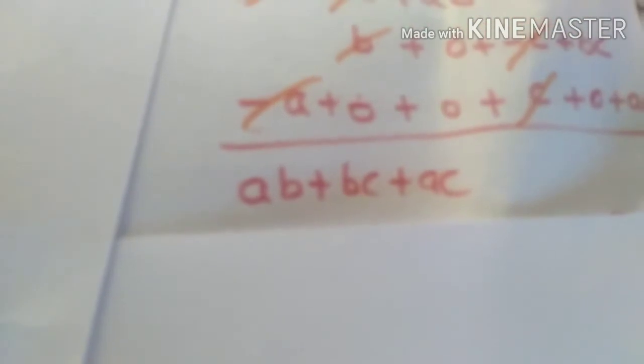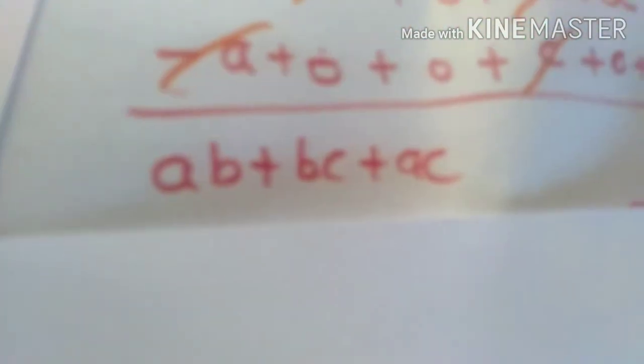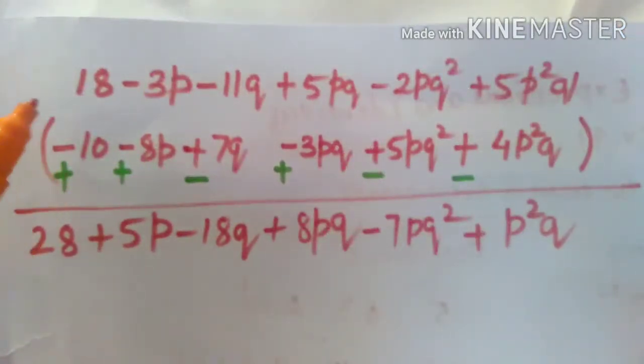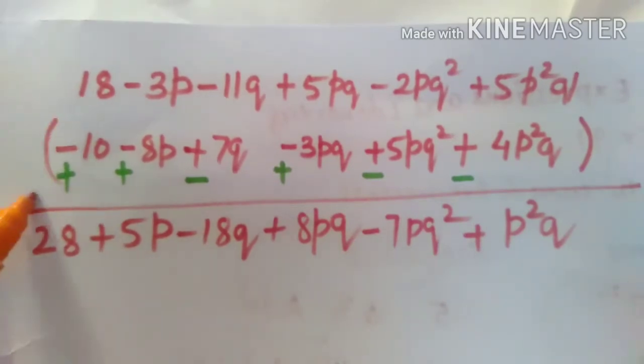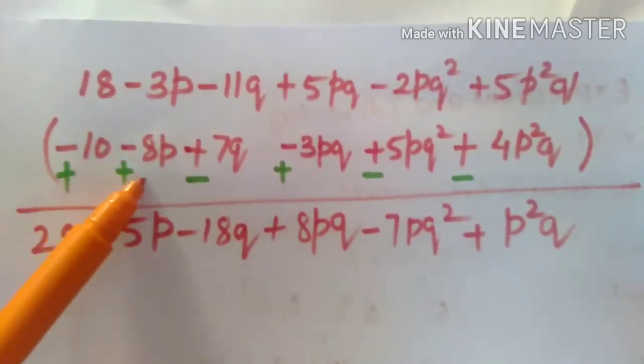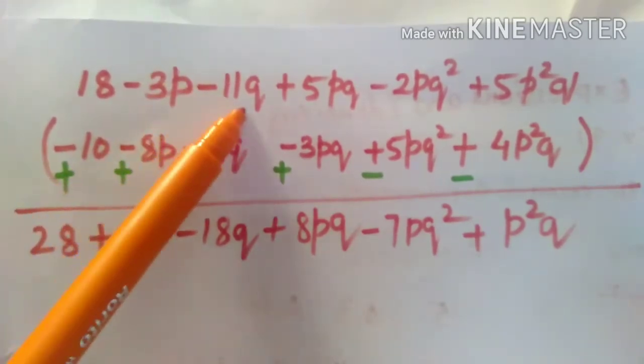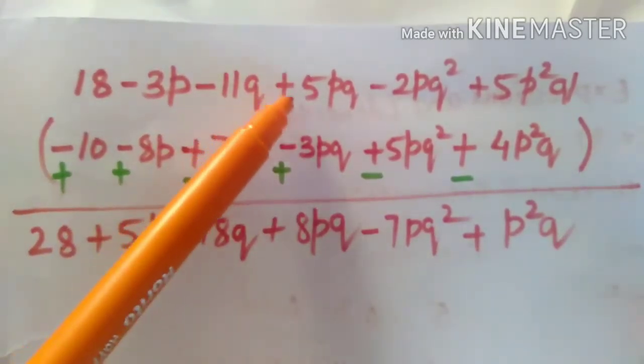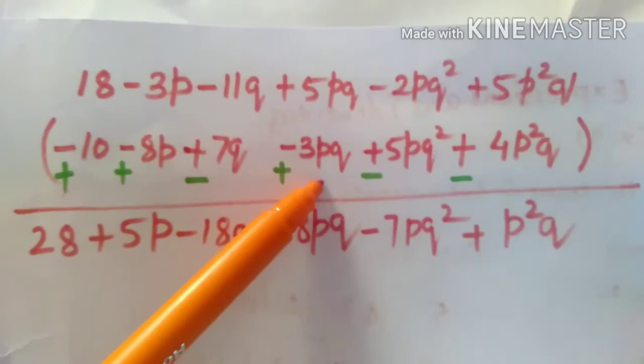So this one is the answer as AB plus BC plus AC. 18, written in such a way that they are being arranged in this way. 18, the constant terms, they are written like this. Then minus 3P with this 8P minus 11Q, 7Q, 5PQ,